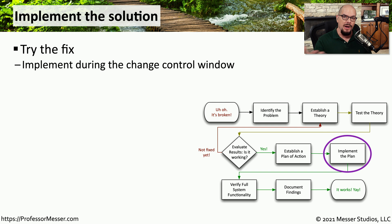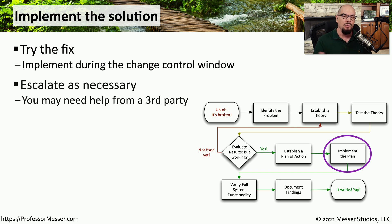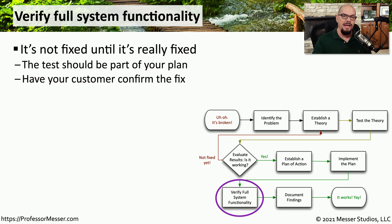We've now got a plan A, perhaps a plan B and a plan C, and a change control window — now it's time to try to resolve the problem. We can replace the cable, upgrade software, or do anything else required during our change control window. If we don't have the resources to resolve this in a timely manner, we may want to contact a third party for additional help. Of course, replacing the cable or upgrading the software doesn't guarantee the fix — you need to circle back to the customer, have them try the fix, and have them confirm whether the problem is truly resolved.